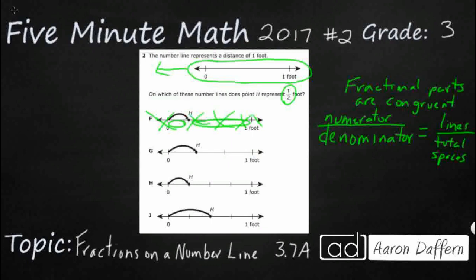Now G's got equal pieces. We could do something with G. I see we've got one, two, and three pieces, so that means we're dealing with thirds. And H is the first hop over, so that's the first line. That's where we get one third. There are three spaces or three pieces between zero and one, and H is at the end of the first one. Let's look at answer H.